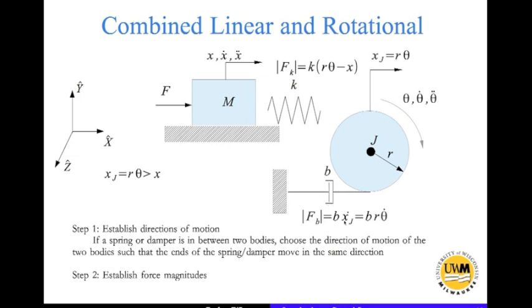So the force in this damper, the magnitude of the force in this damper, is given by b times X_J_dot. But X_J_dot is nothing but r times theta_dot. Why is it r times theta_dot? Because we take the differentiation with respect to time of X_J. R is a constant; only theta varies with respect to time. So the damper force F_P is b times r*theta_dot.